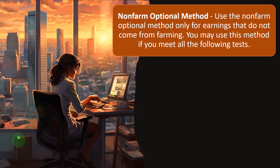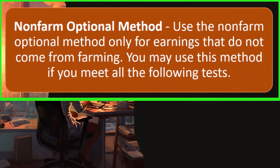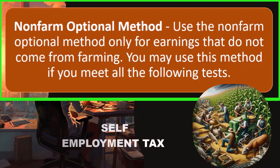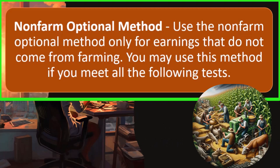Continuing on with the non-farm optional method. We talked about the methods for calculating the self-employment tax — usually you use the default method, but sometimes you might use different optional methods, which might result in larger Social Security and Medicare taxes, i.e., self-employment tax, but could actually be beneficial in some cases.